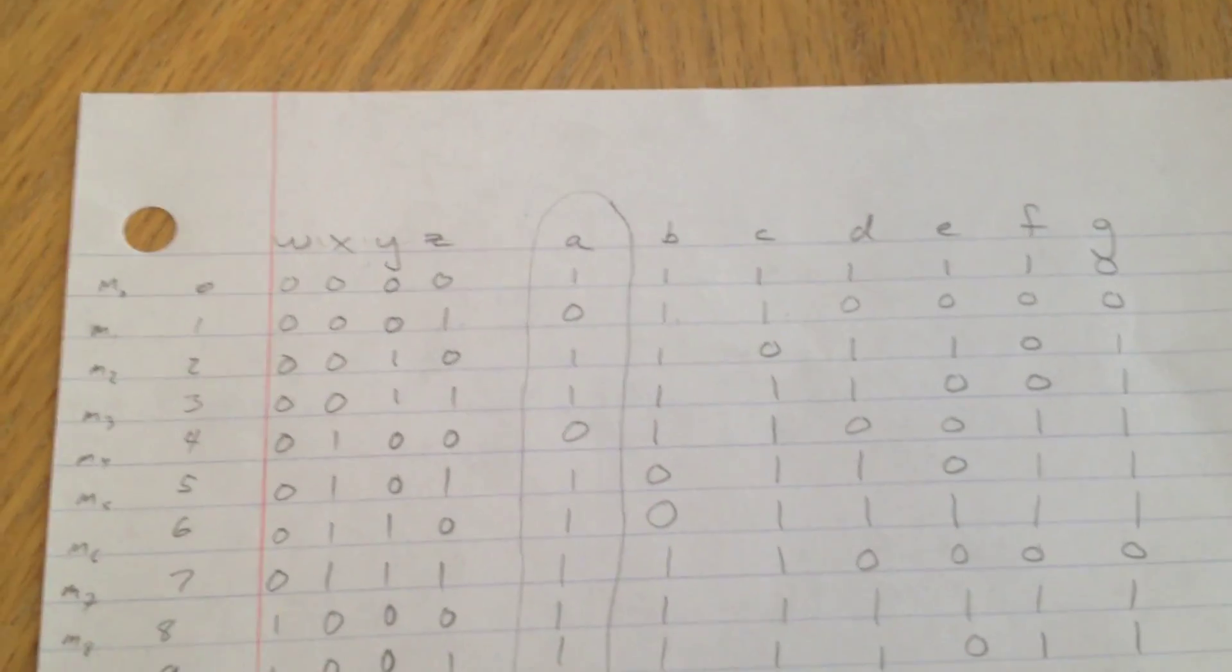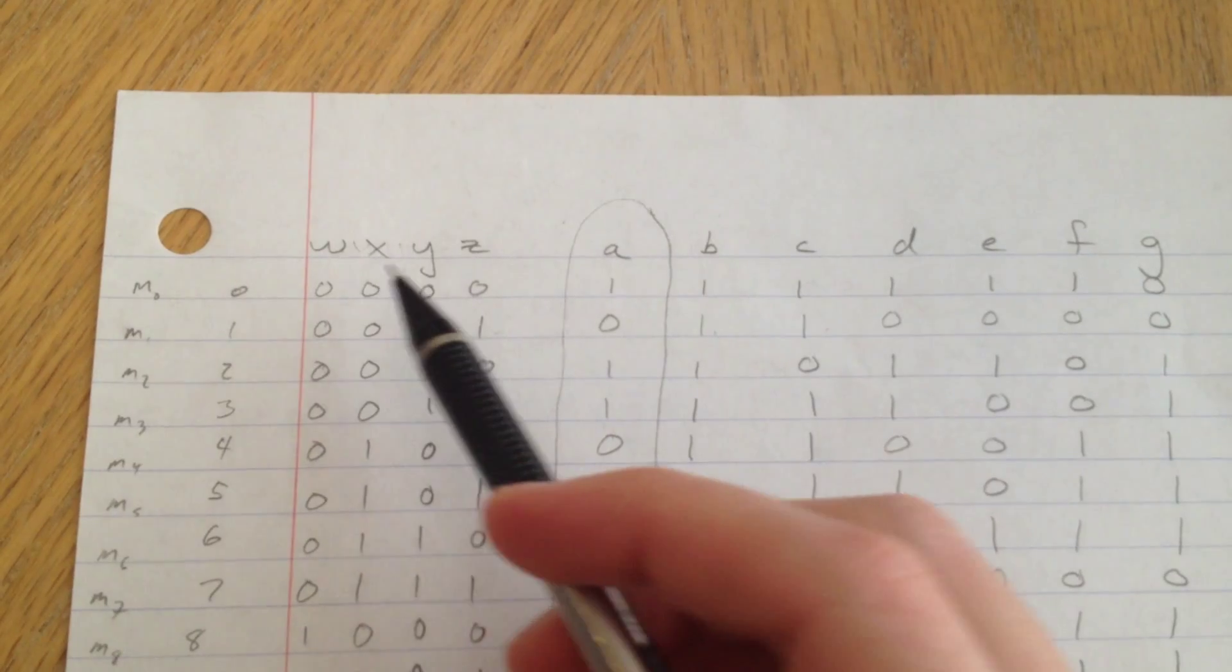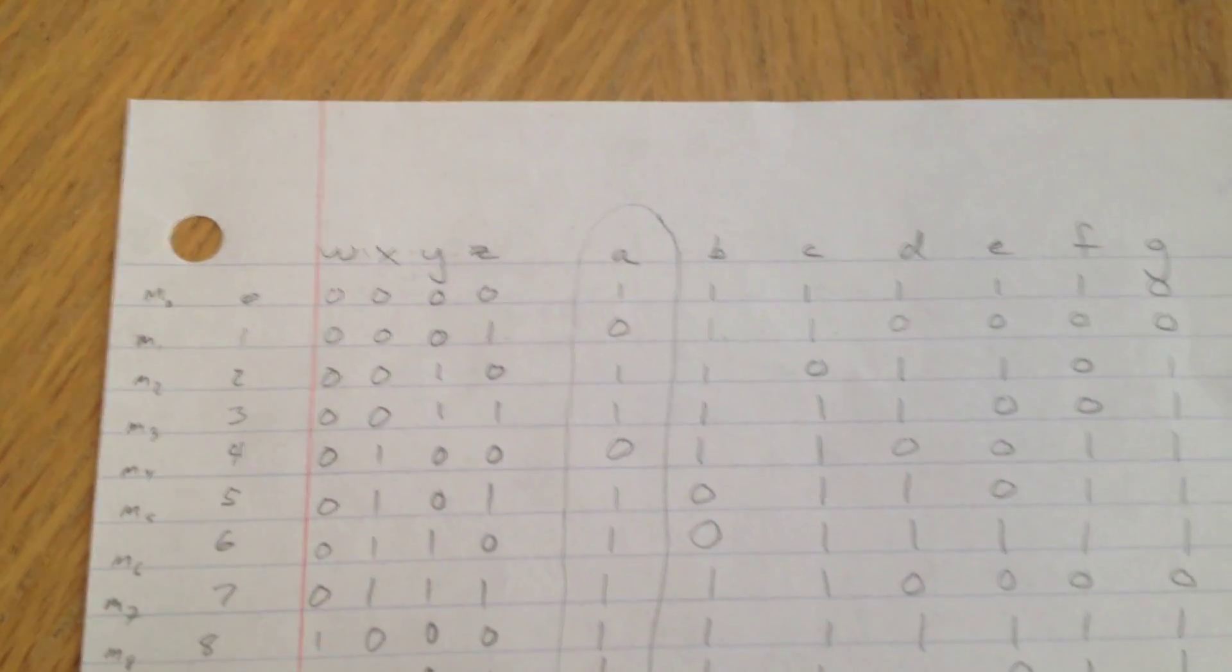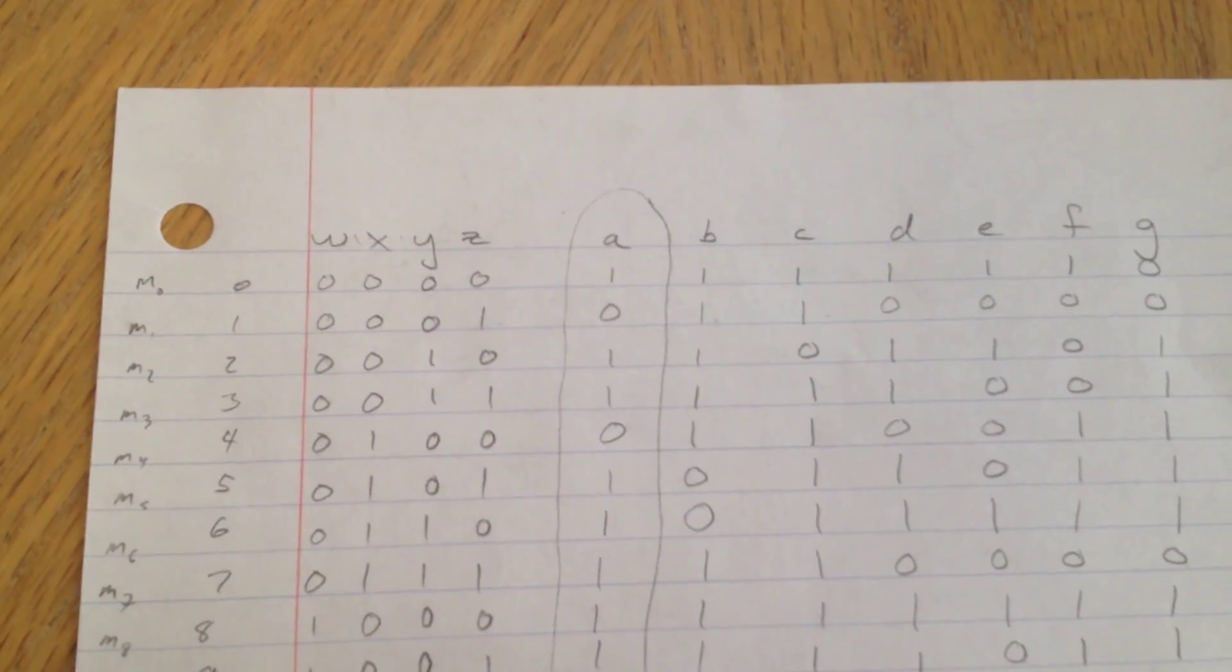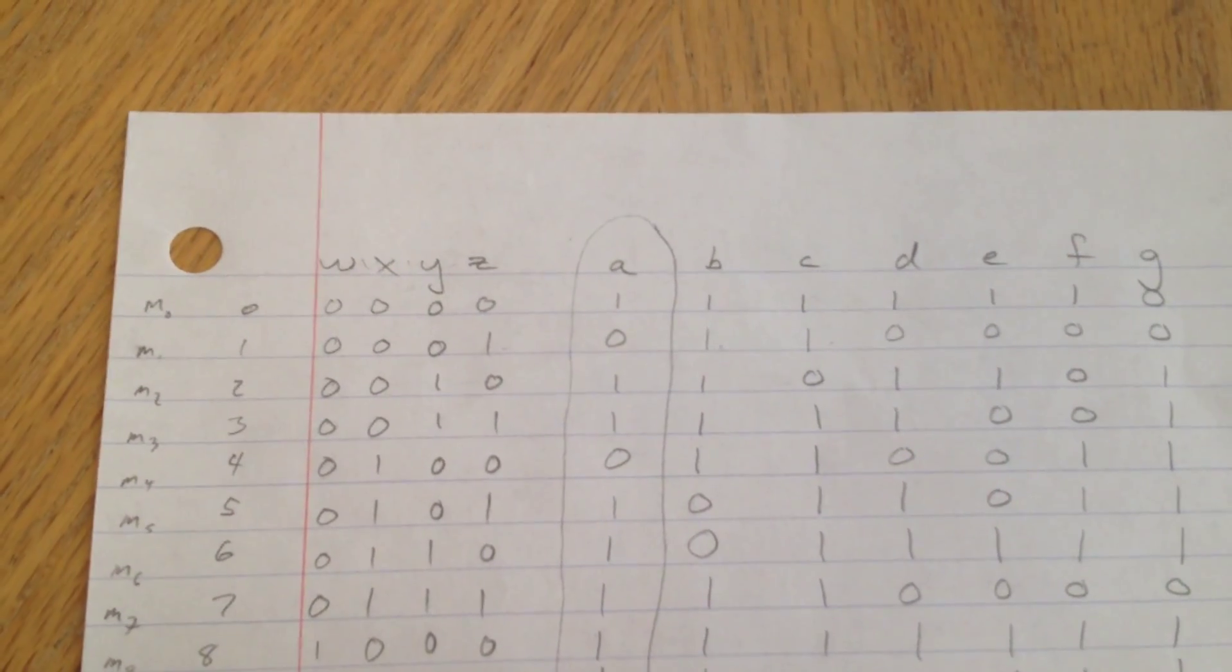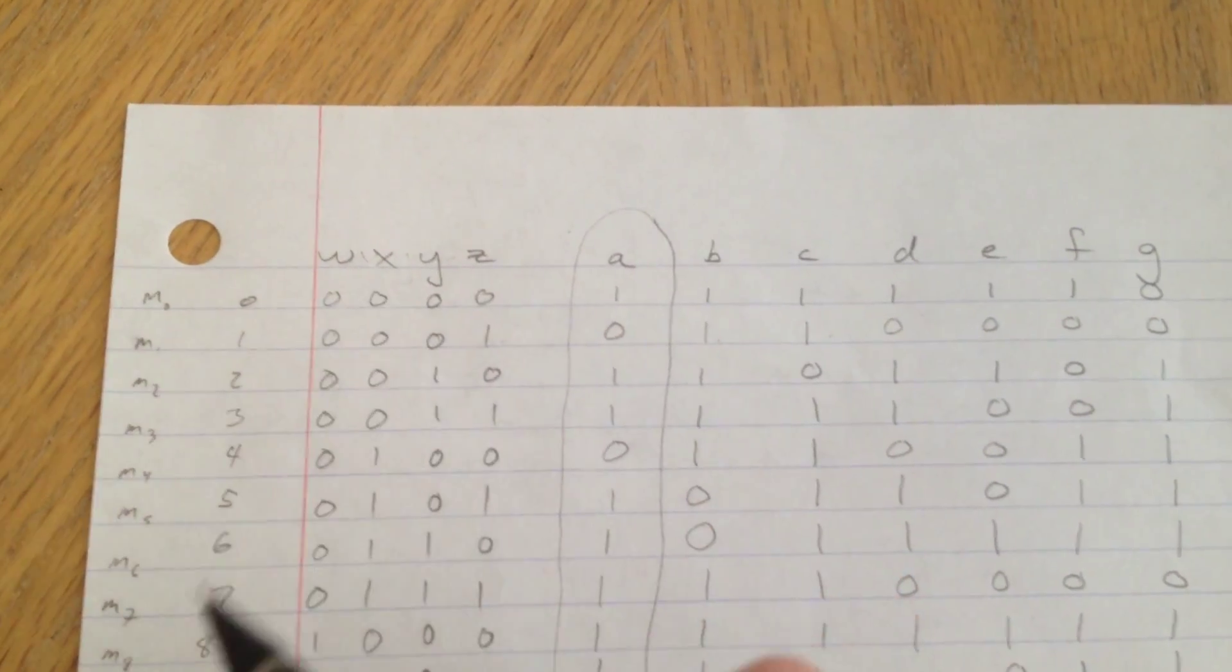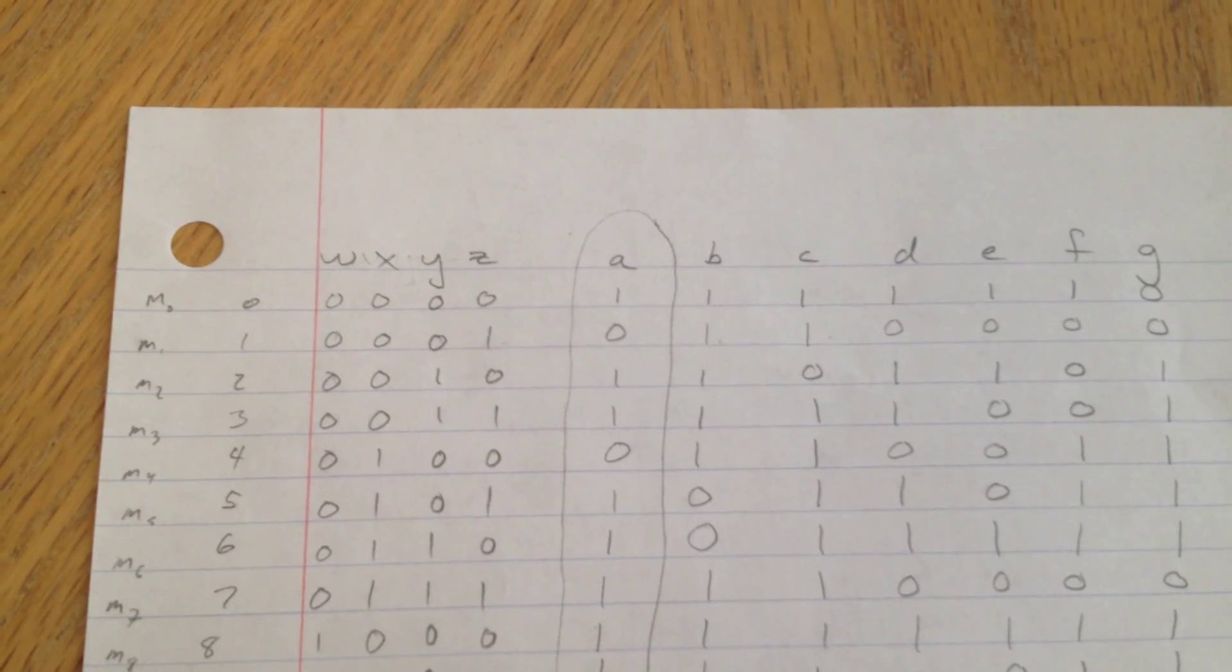Alright, so we know that we need at least four inputs. W, X, Y, and Z. Why do I need four? Well, because three inputs just won't cut it. You'll only be able to display zero to seven or have eight possible outputs. So you need that extra W to get all the way up to nine.